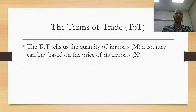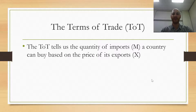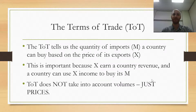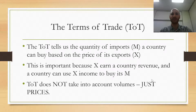The terms of trade tells us how many imports a country can buy based on the price of its exports. This is because exports earn a country revenue and then it uses that revenue to buy imports. The terms of trade doesn't take into account how many imports or exports are sold or bought — it's just about their relative prices. Not volumes, just prices.